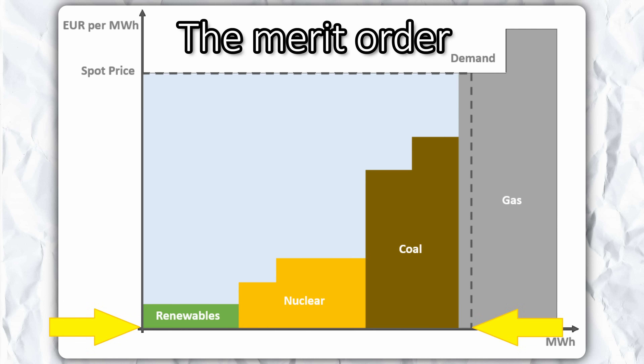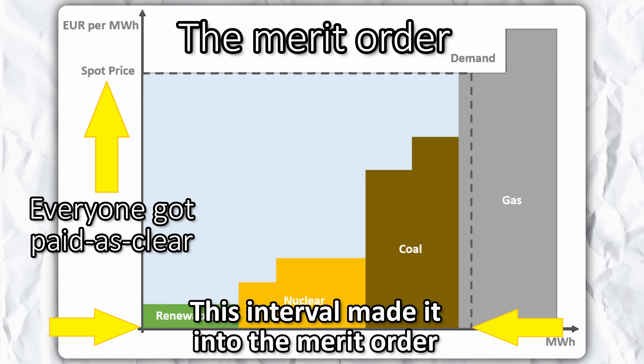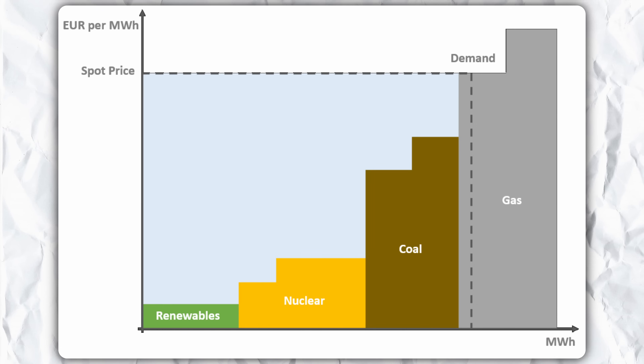When producers bid their electricity in 1 MWh blocks, they bid it at the lowest price at which they are willing to sell — no more and no less. The exchange then orders these bids in ascending order of bidding price; this is what we call the merit order. Some number of those bids is going to be necessary to cover the consumption for that particular hour of the day. So if the number is say 10,000 MWh, then the cheapest 10,000 MWh are selected to actually generate. All of these MWh get paid not at the price they were bid at, but at the price of the most expensive MWh that made it in — we call this rule pay-as-clear, as opposed to pay-as-bid.